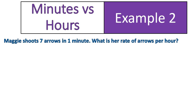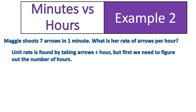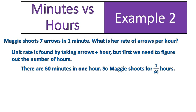Here's our second example. Maggie shoots 7 arrows in 1 minute. What is her rate of arrows per hour? Pause the video, try it out, and then come back and look at my full explained answer afterwards. First, we have to find the unit rate of arrows per hour, so we need to figure out how many hours she spent. There are 60 minutes inside of 1 hour, so she shot for 1 sixtieth of an hour.